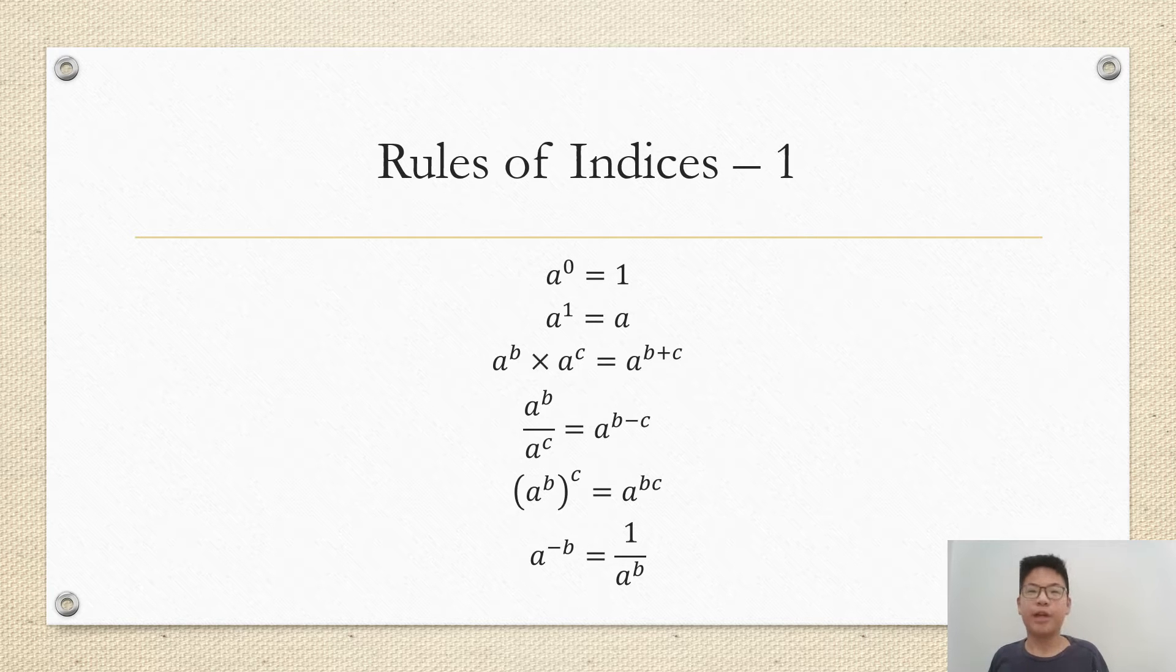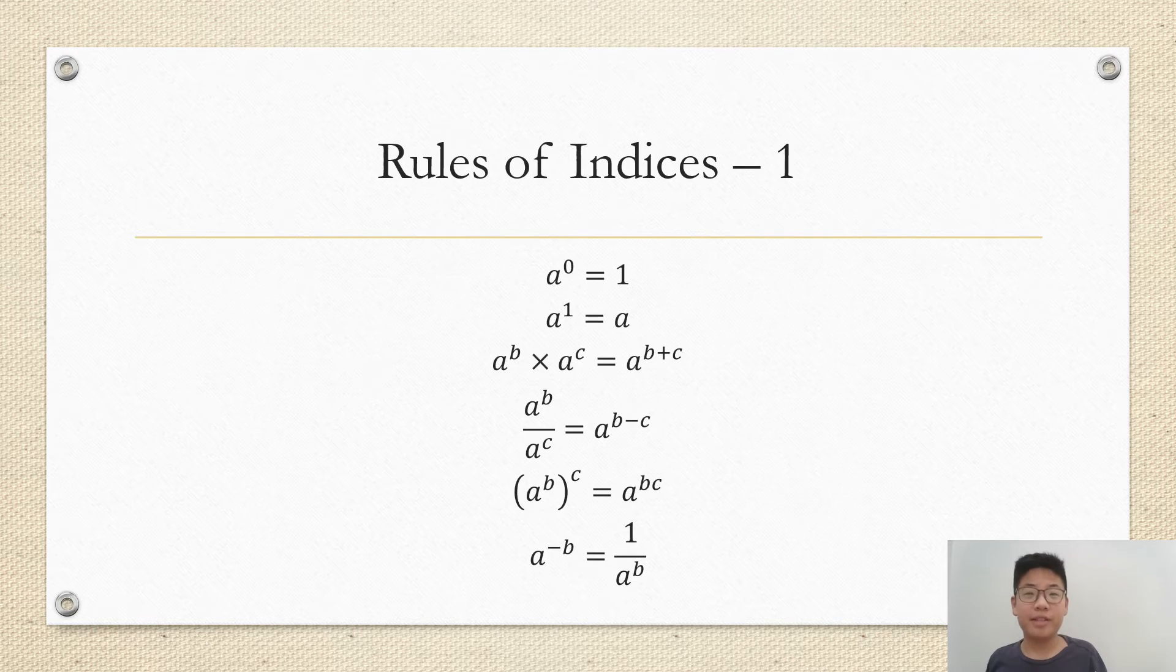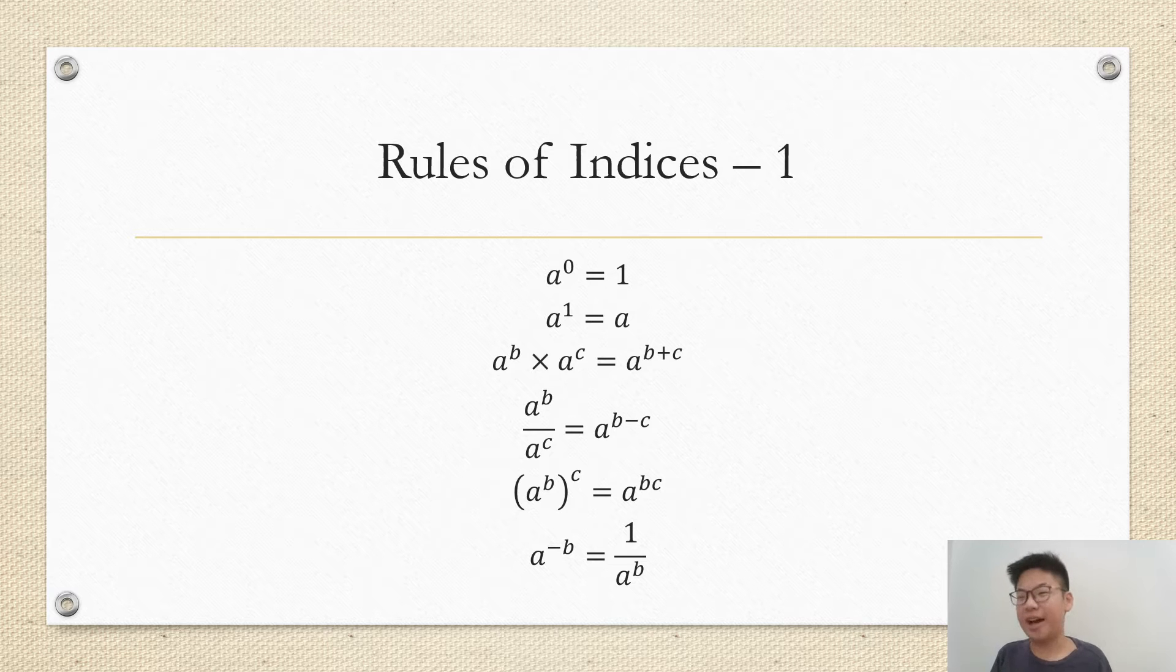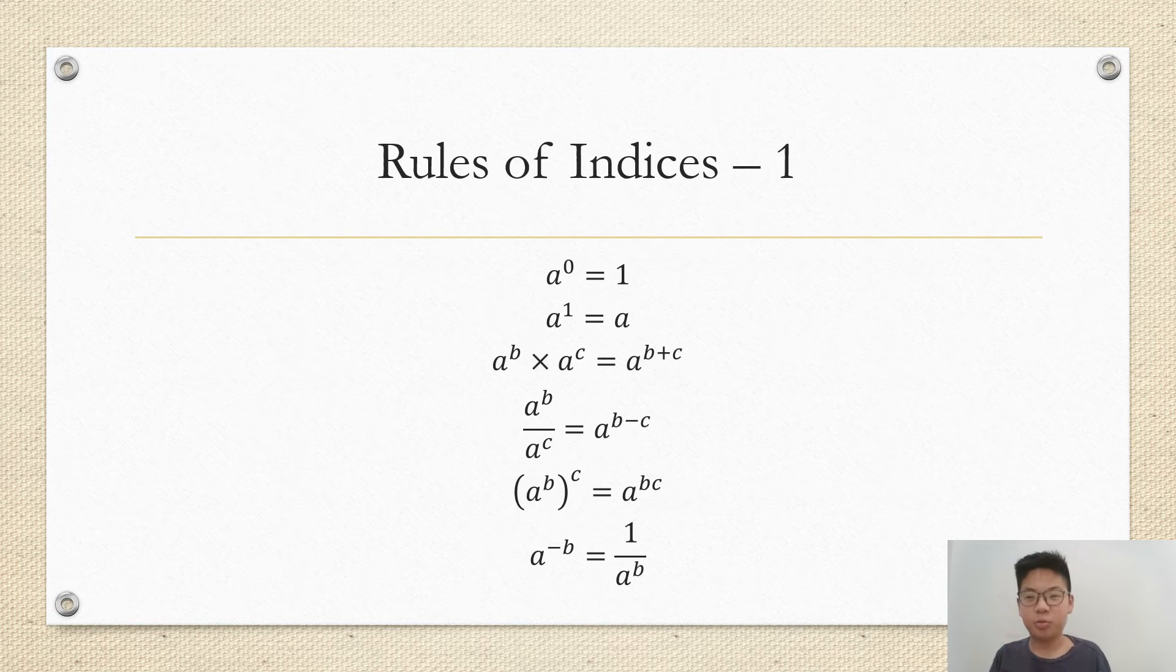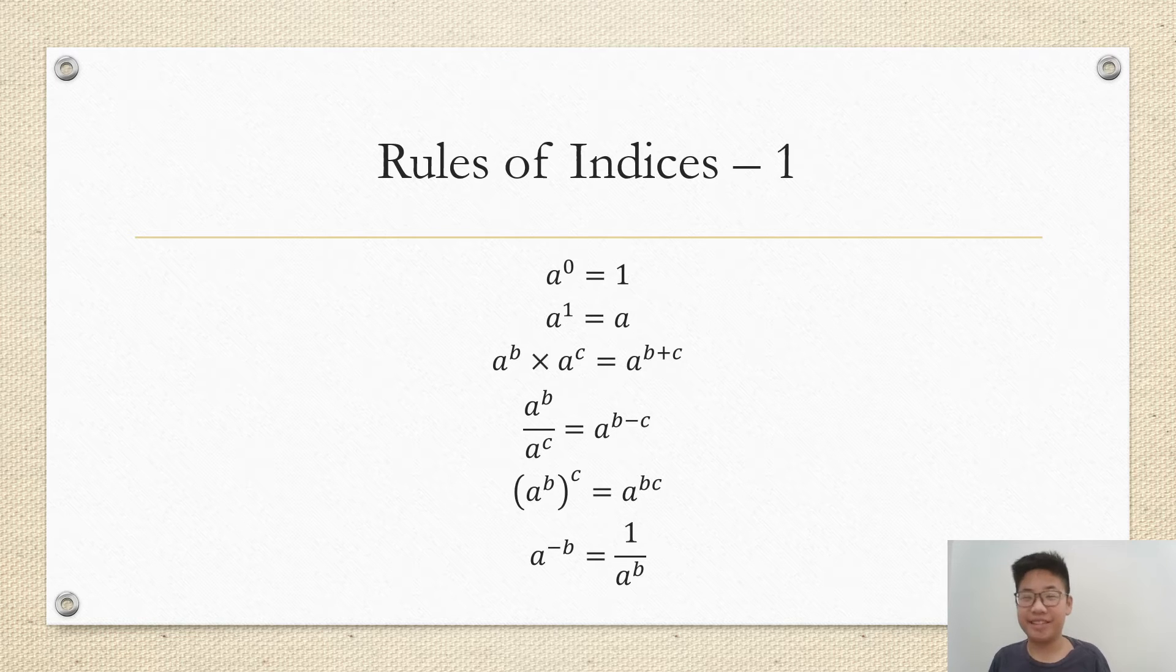Remember what we've seen before, and here are the first few rules of indices. You can take a screenshot and memorize them. So a to the power of zero is one, which simply means that you multiply a zero times, you get one. This makes sense because when you multiply anything by one it won't change. Hence one is like zero. It's called the multiplicative identity in maths.